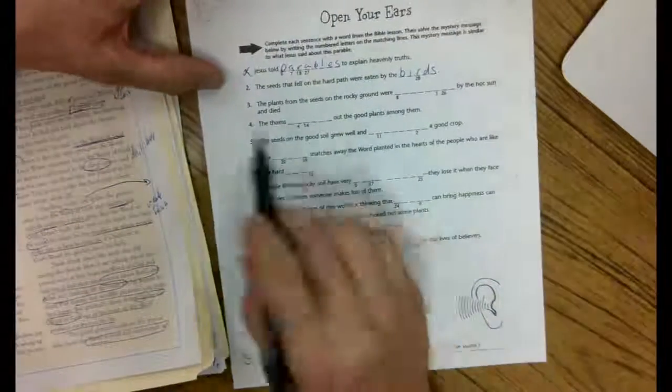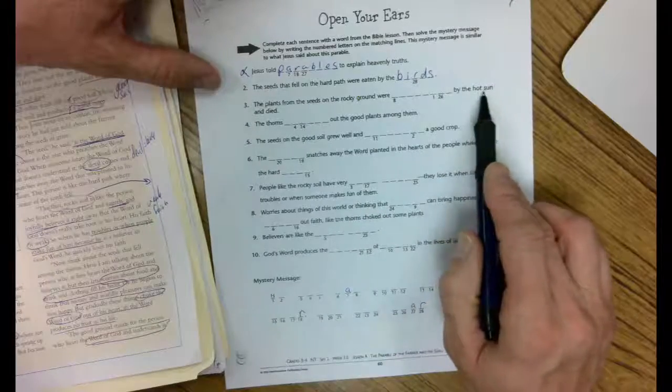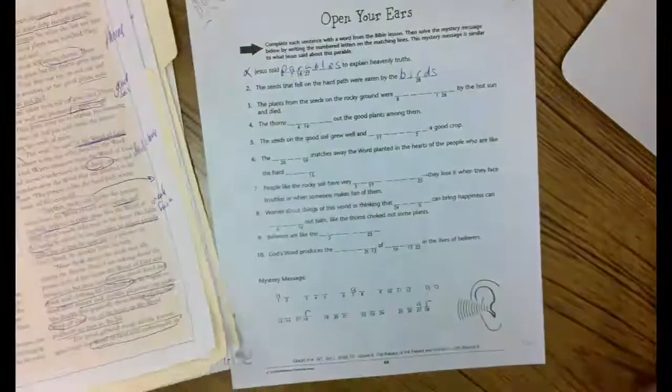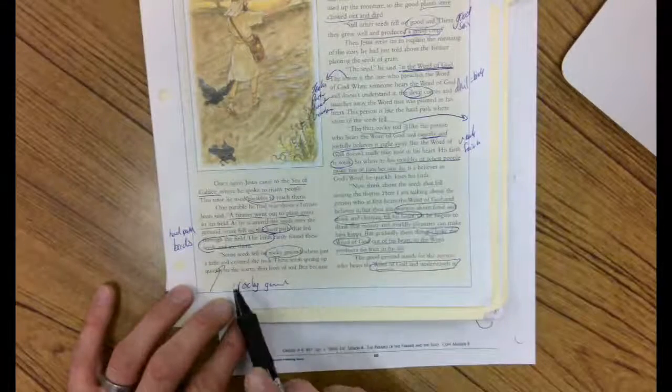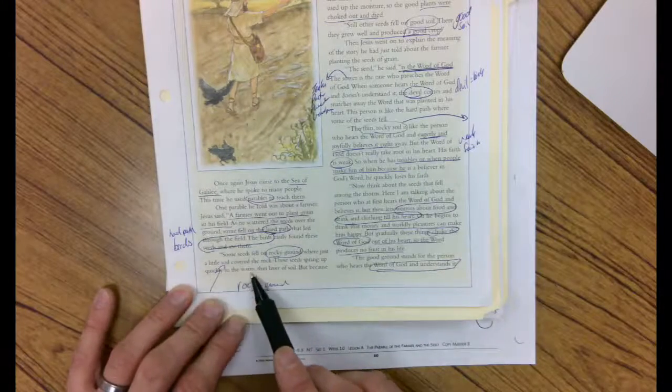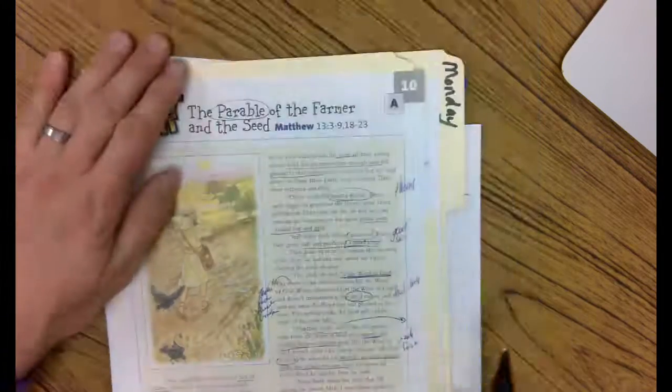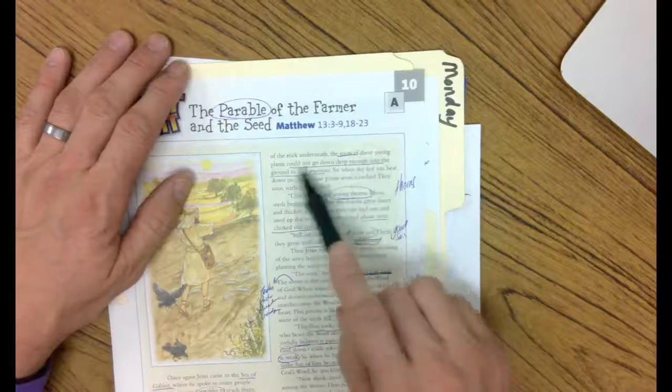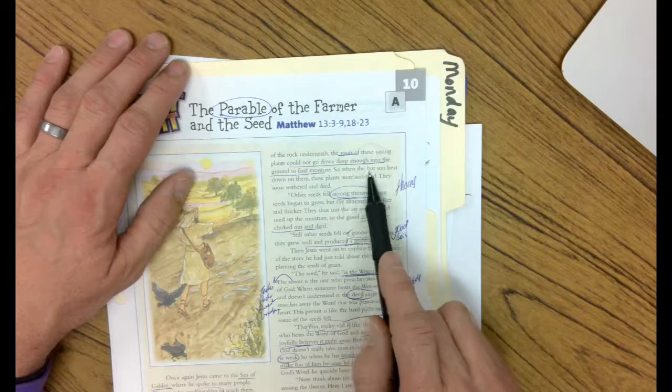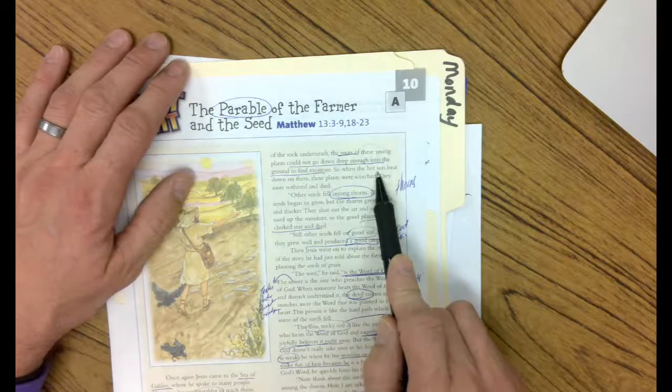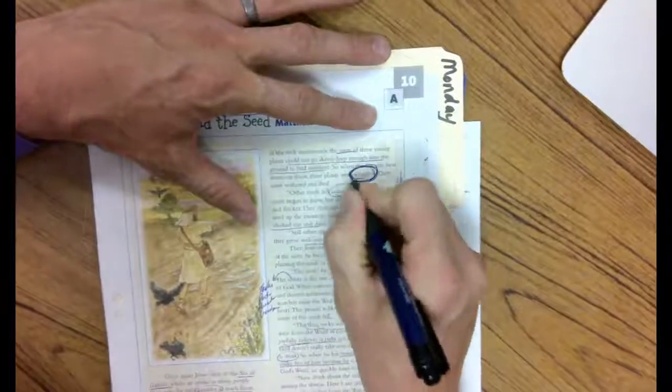Let's jump to number three. The plants from the seeds on the rocky ground were blank by the hot sun and died. Well, I remember that they sprang up really quick. These seeds sprang up quickly in the warm sun in the thin layer of soil. But because the rocks underneath, the roots of the young plants could not go down deep enough into the ground to find moisture. So when the hot sun, here we go, this is the part we need, beat down on them, these plants were scorched. There it is.